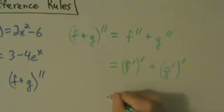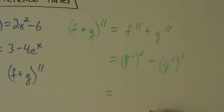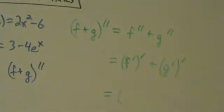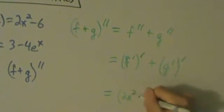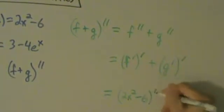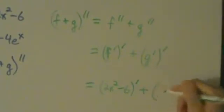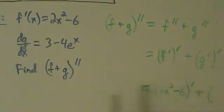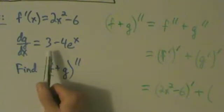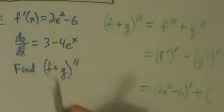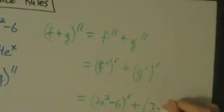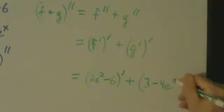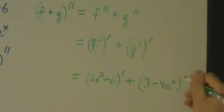Alright, so f' is 2x² - 6. So let's go ahead and write this as (2x² - 6)'. And then plus g'. So g' is the same thing as dg/dx, right? That's just notation. So that's 3 - 4e^x. So this is (3 - 4e^x)'.